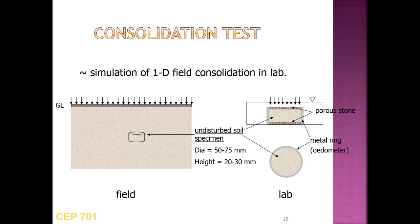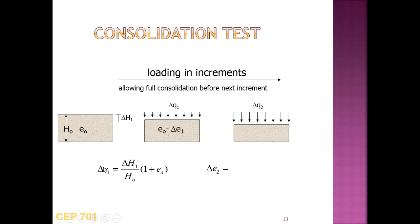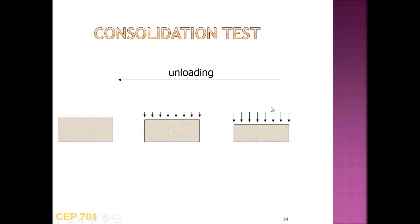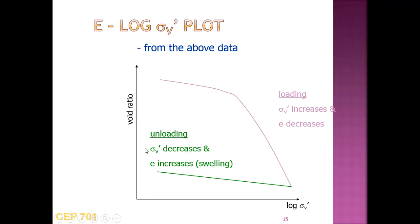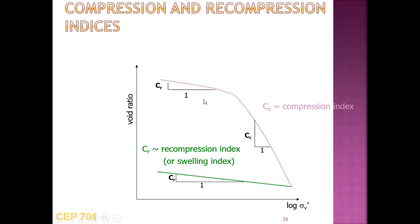A plot of void ratio E versus log sigma-V' is obtained. Loading in increments gives delta E1, delta E2, delta E3 in successive stages. During unloading, the specimen swells. During loading, pore water pressure decreases and effective stress increases; during unloading, pore water pressure increases and effective stress decreases. The slope of the loading line gives the compression index Cc, and the slope of the unloading/reloading line gives the recompression index.